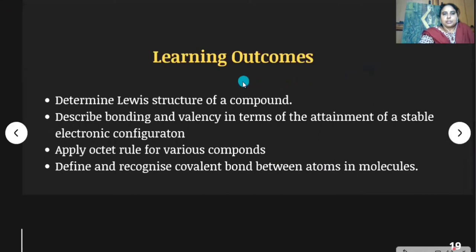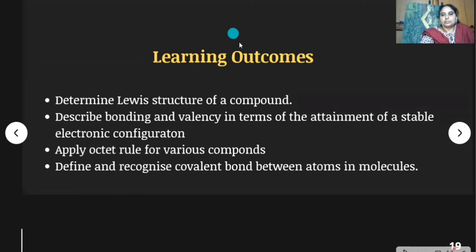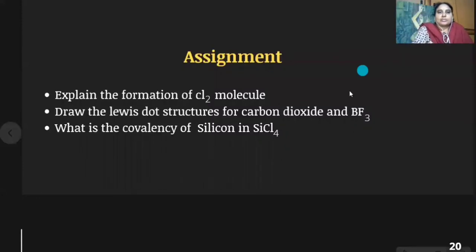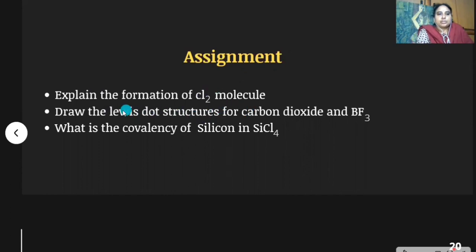What we have learned in this topic: you should be able to determine the Lewis structure of a compound, describe bonding and valency in terms of attaining stable electronic configuration, apply the octet rule for various compounds, and define and recognize covalent bonds between atoms in molecules. For assignment: explain the formation of chlorine molecule, draw Lewis dot structures for carbon dioxide and boron trifluoride, and determine the covalency of silicon in silicon tetrachloride.